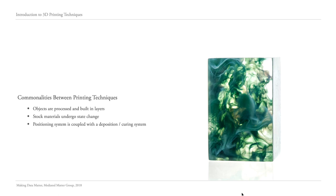Even though there are many different ways to 3D print — such as extruding melted plastics or using stereolithography to cure liquid resins — all of these methods have certain commonalities. In every system of 3D printing, or additive manufacturing, the object being built is constructed in layers: a three-dimensional object is sliced into different layers and then built one layer at a time. All systems also have some kind of material stock — whether a thermoplastic or a photopolymer resin — that undergoes a change of state. And all systems have a positioning system coupled with a deposition or curing system that adds material in a selective manner.